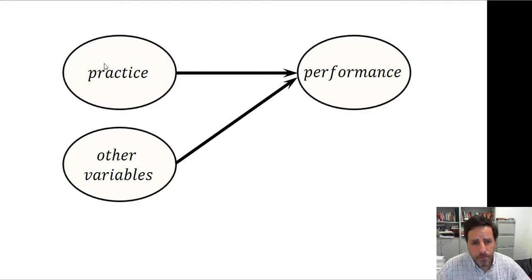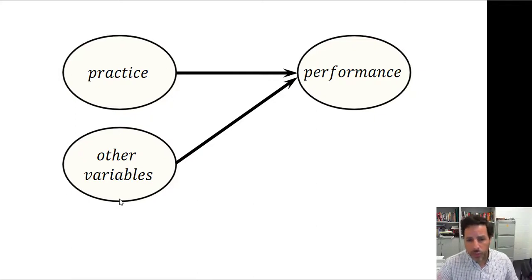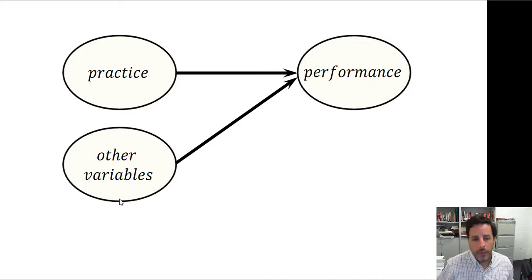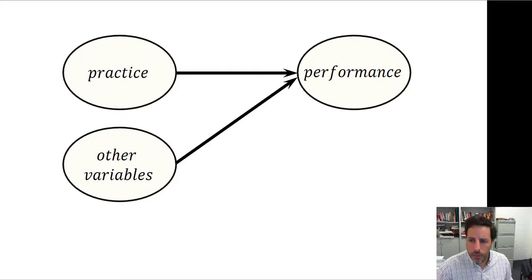Here is an example. The variable in one node is practice, the variable in the other node is performance, and there is an edge. So this model indicates that practice causes performance. Sometimes we can put more than one variable in a node, and we typically do this when those variables are not going to be measured.